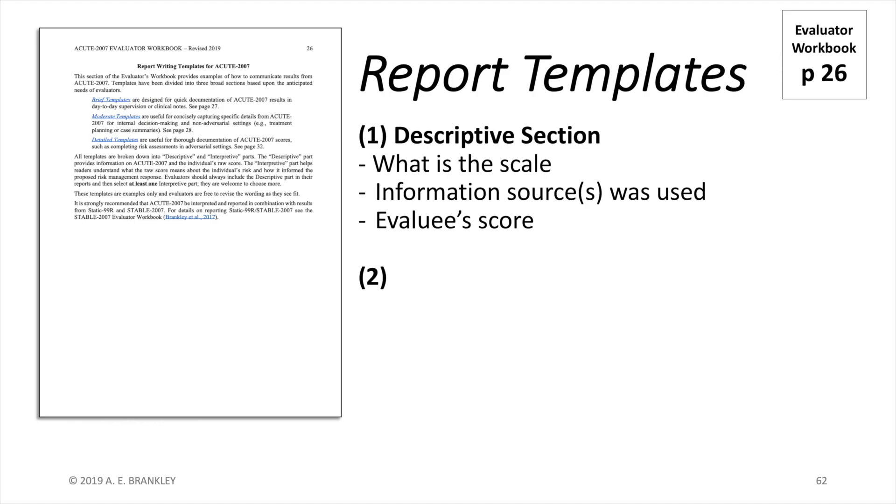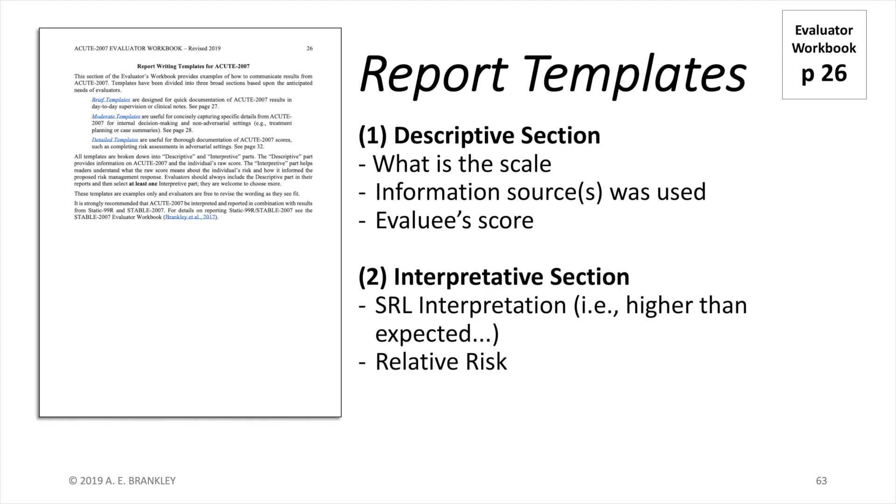Regardless of the reporting template you use, they all have two sections. The first section is purely descriptive, giving the reader the information they need to know about the scale and the scores. The second part is the interpretation, whether the risk was higher or lower than expected and so on. There are no options in the descriptive sections—they are required in reporting. The interpretive sections come with multiple options. You can choose and combine as many as you find useful. Examples of all templates are given in the workbook.